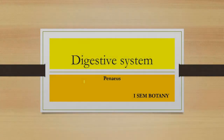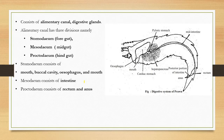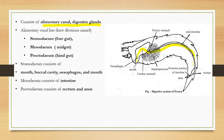The digestive system of Penaeus consists of two parts: the alimentary canal and the digestive glands. The alimentary canal is the long tube, and the digestive glands are associated structures.